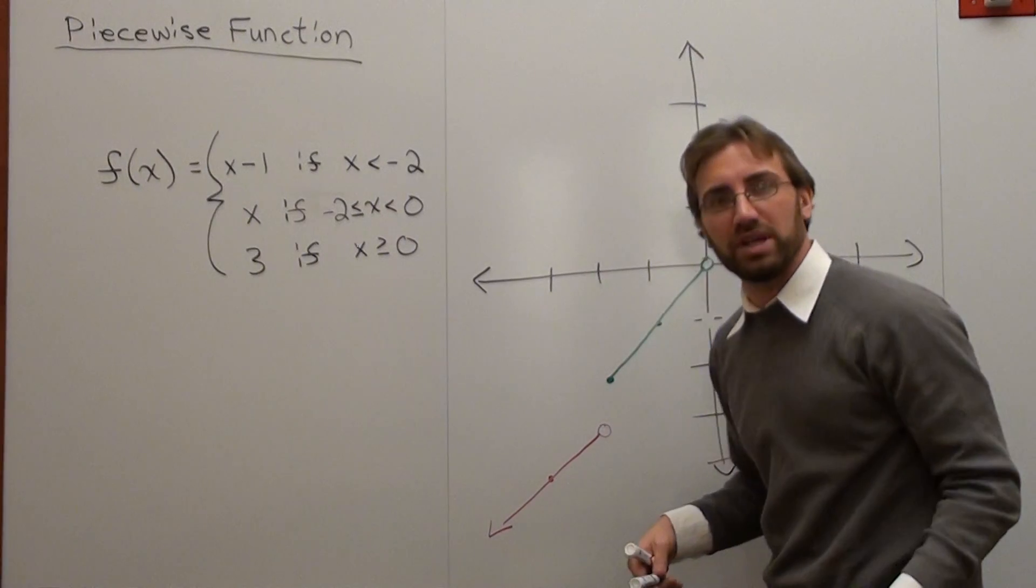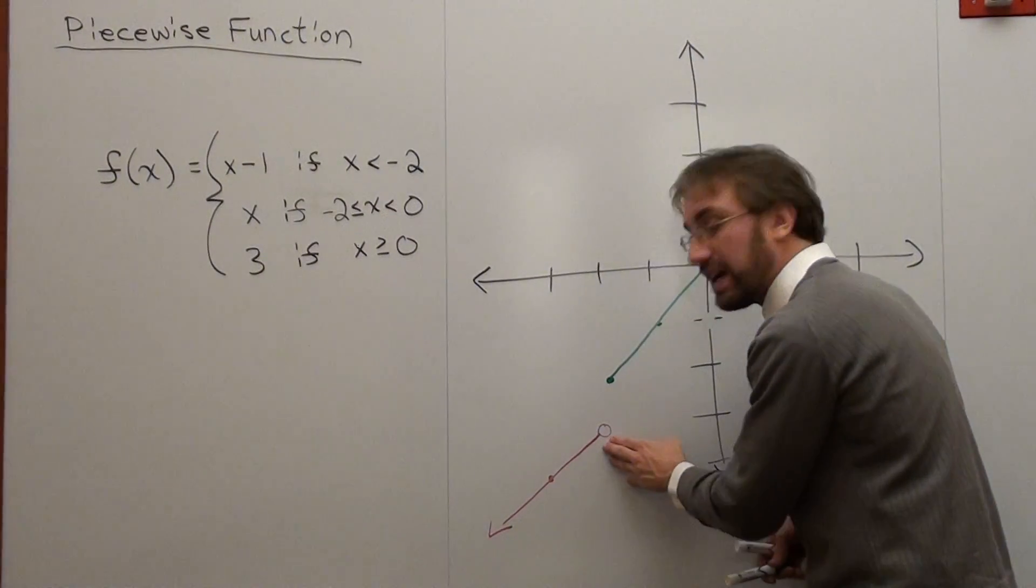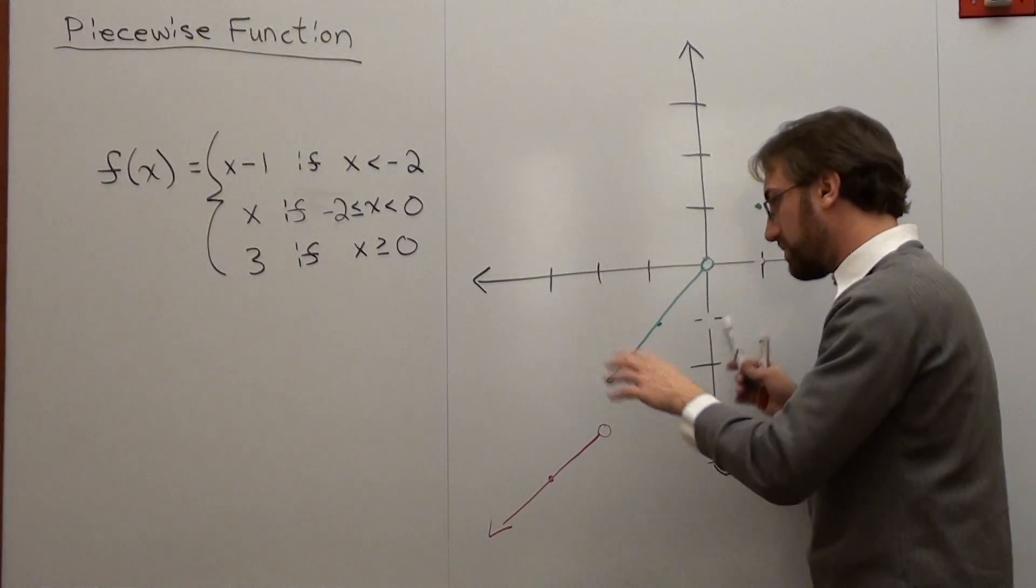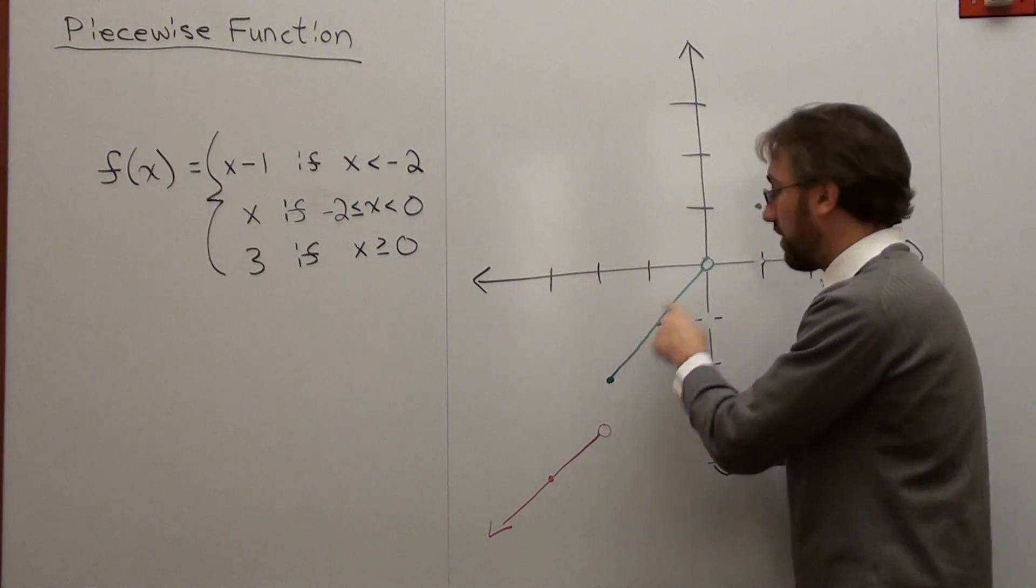That's a piecewise function. It's basically cut into pieces. I've got something here, but then it stops. It stops. There's no arrow because it starts right there and it doesn't go any further.